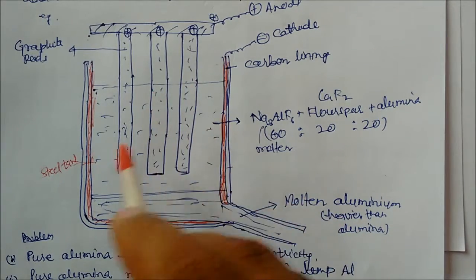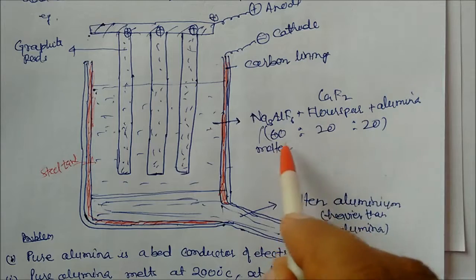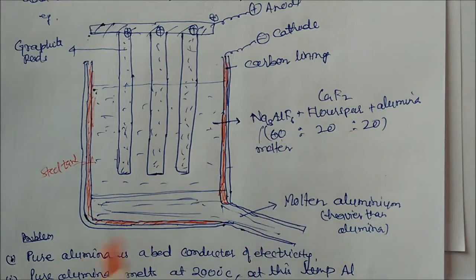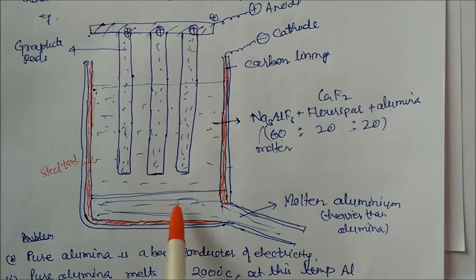This solution in which these three graphite rods are immersed contains cryolite, fluorspar and alumina in the ratio 60:20:20. More percentage of cryolite and less percentage of alumina. And we can see here last part some molten aluminium is present. And this molten aluminium is heavier than alumina. This is very important.